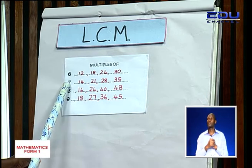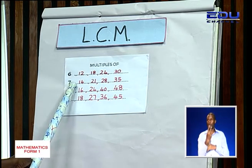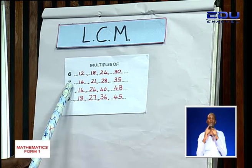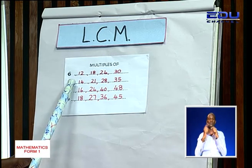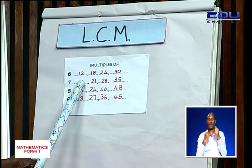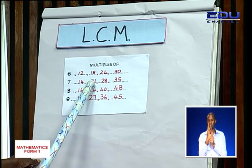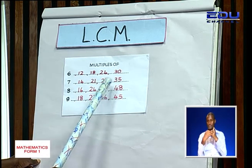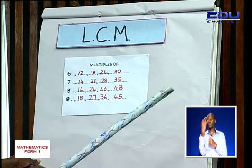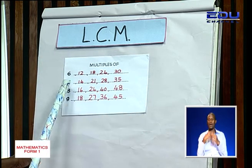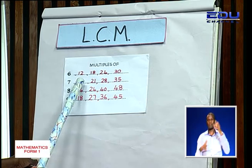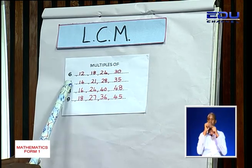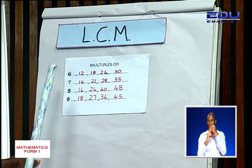Our second example is 7. So which are the multiples of 7? I have 14, 21, 28, 35, and there are many other multiples of 7. Now, all these numbers will divide 7 without a remainder.